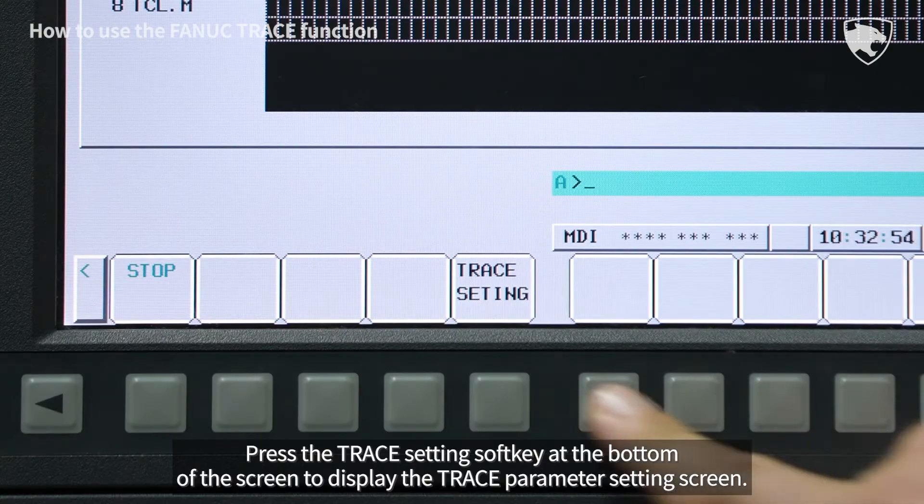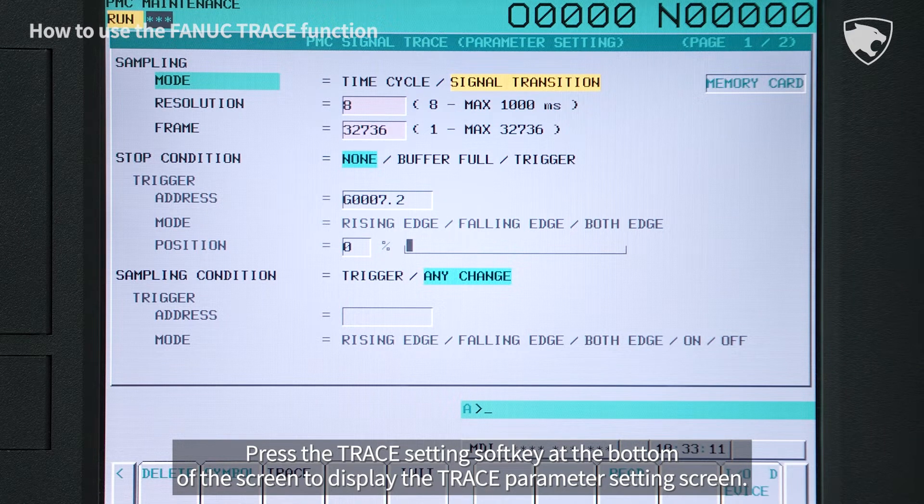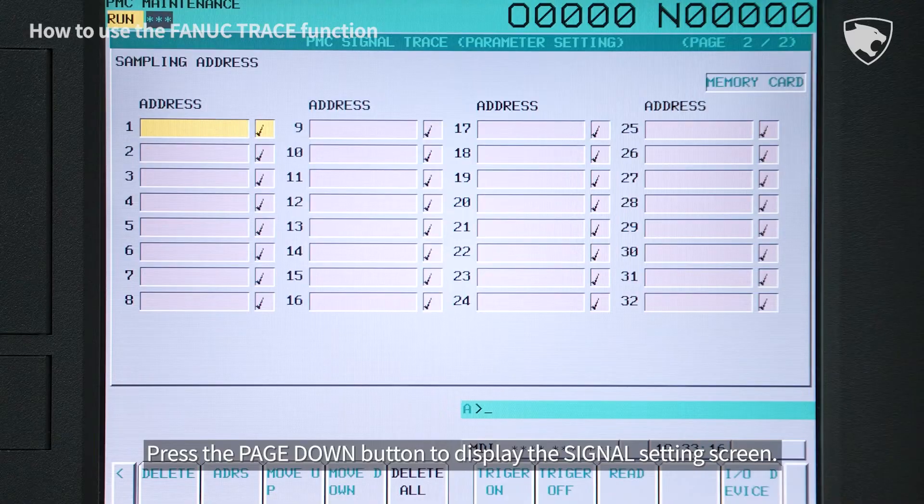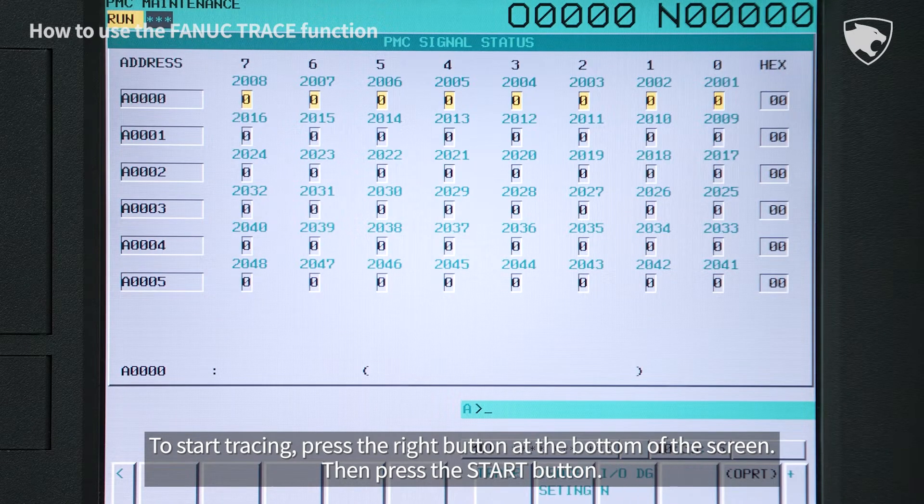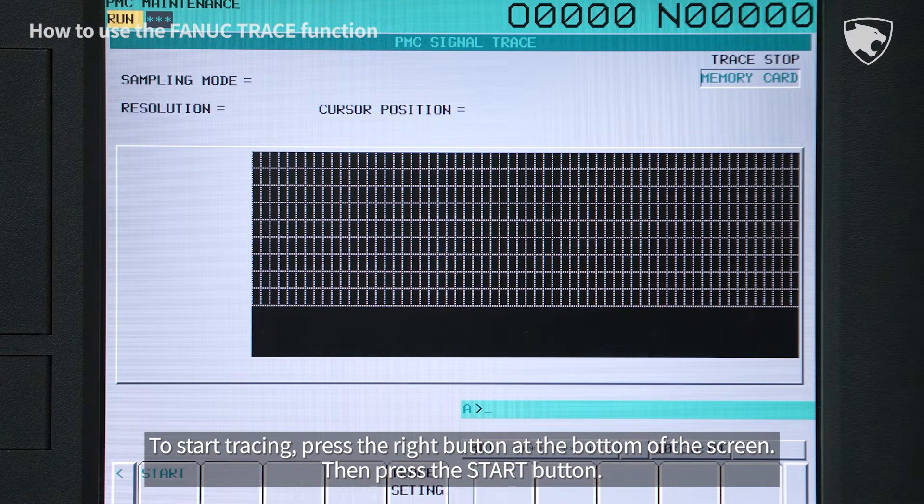Press the trace setting soft key at the bottom of the screen to display the trace parameter setting screen. Press the page down button to display the signal setting screen. To start tracing press the right button at the bottom of the screen then press the start button.